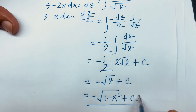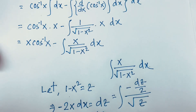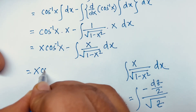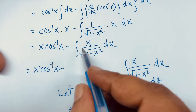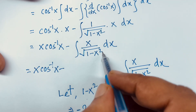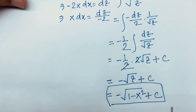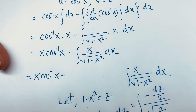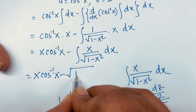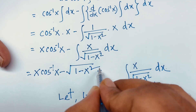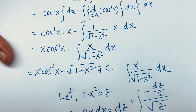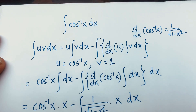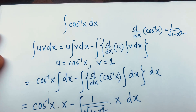Now we'll put this value back into the equation. So it will be x cosine inverse x minus, and since the integral of x over square root (1 minus x squared) dx equals minus square root (1 minus x squared) plus c, the final answer is x cosine inverse x plus square root (1 minus x squared) plus c. So thank you all — if you enjoyed this video, please subscribe and like. Goodbye, take care.